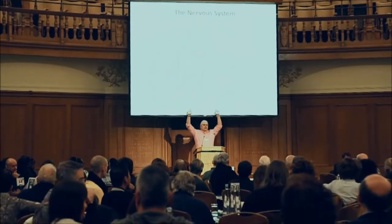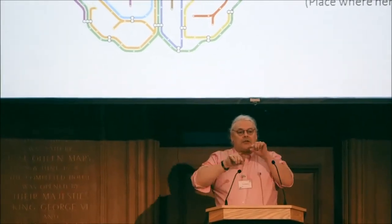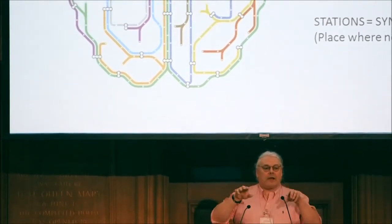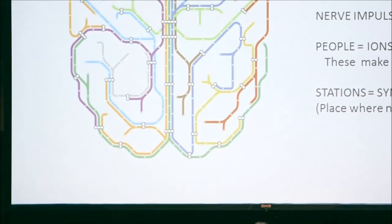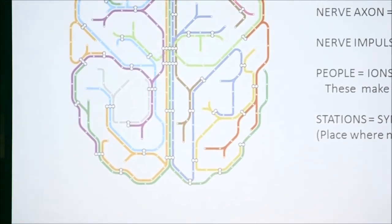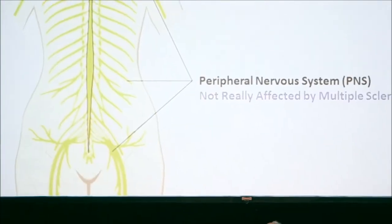What we first need to understand about multiple sclerosis is that it's essentially like a tube map — it's a network. If you view the brain as a tube, this is the neural network; we're basically just a bag of nerves, and the tube lines are the nerves going from different parts of your body. The tube trains are the nerve signals, and the stations are where we interconnect to change direction. That's how the nervous system works, and in multiple sclerosis there are problems with that train network.